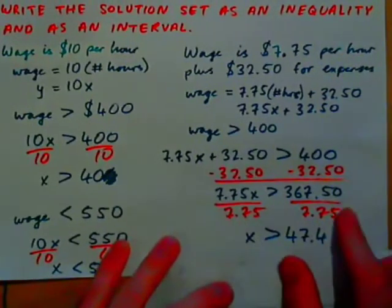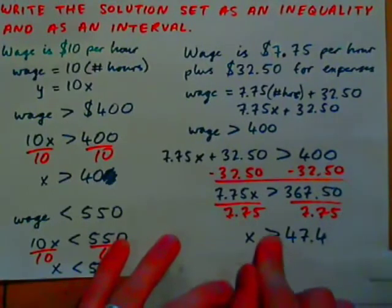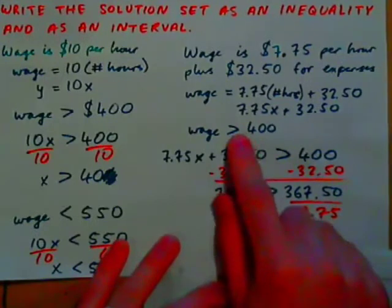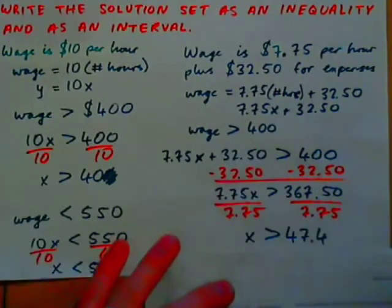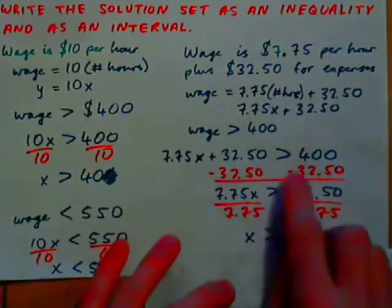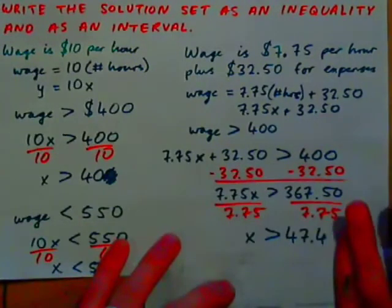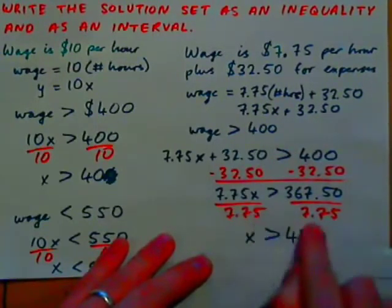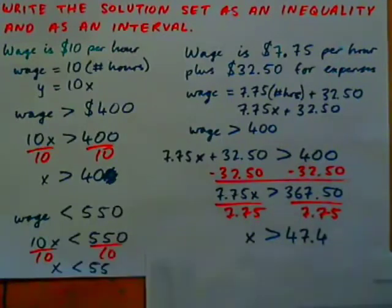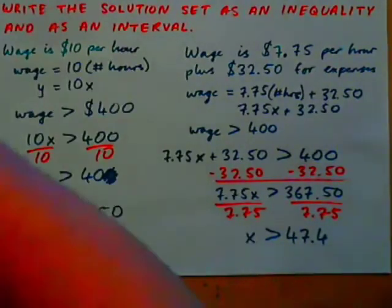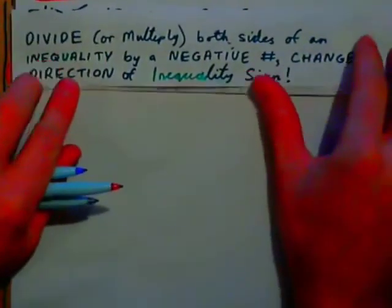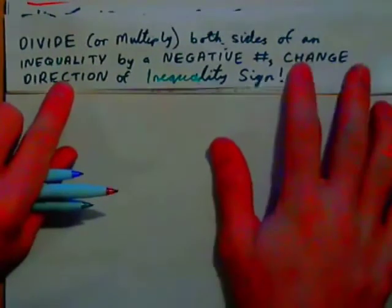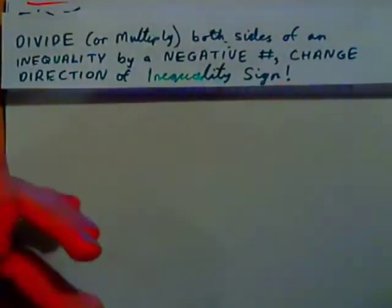In real life, inequalities are probably more useful than equations, because you often want to know when something is more or less than something else. We're solving inequalities exactly like equations — just keep writing the inequality sign and solve as if you have an equal sign. The one key difference is: when we divide or multiply both sides of an inequality by a negative number, we must change the direction of the inequality sign. That's the only difference.